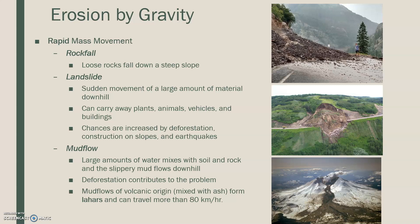The last type of rapid mass movement is a mudflow — basically flowing mud. Large amounts of water mix with soil and rock, and the slippery mud flows down the hill, often caused by deforestation. When you take away trees, you remove what secures the soil, allowing that mud base to flow. A specific type of mudflow comes from volcanic origin, mixing with ash and debris at the top of a volcano and flowing down the sides. These are called lahars and can travel very quickly at over 80 kilometers per hour.